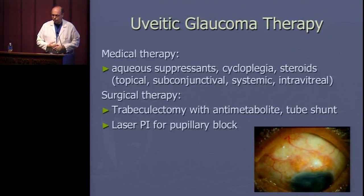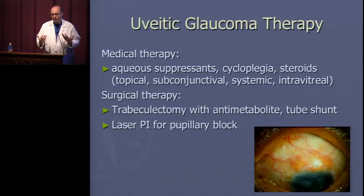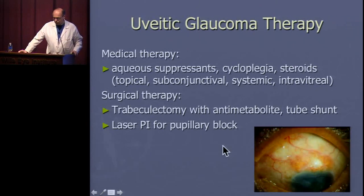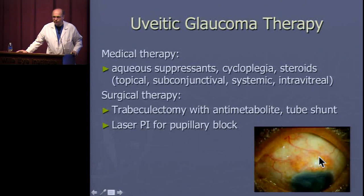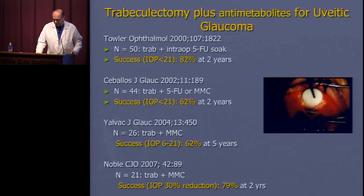Treatment for uveitic glaucoma involves anti-inflammatory treatments, cycloplegia, and various steroid routes: topical, subconjunctival, intravitreal, or oral depending on severity. If still uncontrolled, trabeculectomy with antimetabolite or tube shunt is needed. For historical interest, patients 40–50 years ago even had gold injected into the subconjunctival space for inflammation — we obviously don't do that now. For pupillary block, laser iridotomy remains the primary intervention.